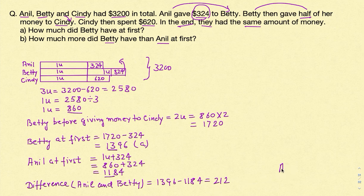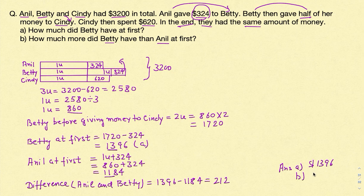Let's write our answers. For Part A, Betty at first had $1,396. For Part B, the difference between Anil and Betty was $212. That's the solution to the question. Hope you liked it — keep watching and don't forget to subscribe to my channel. Thank you.